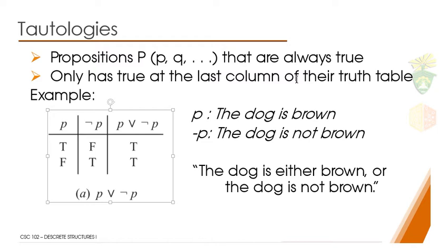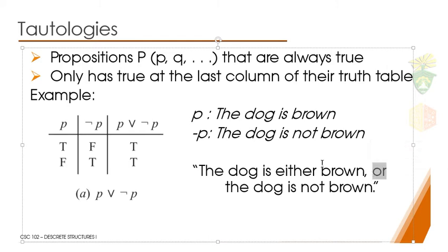If we read this using the OR logical connective, we will have: 'the dog is either brown or the dog is not brown.' So it actually is true. We use the OR, so one of these could be true. If the dog is brown, then of course there is another color there which can be represented as 'the dog is not brown.' In either way, the dog could be brown or not brown, and since we use the OR, one could be true. Basically, the statement is always true.